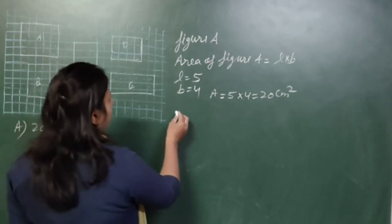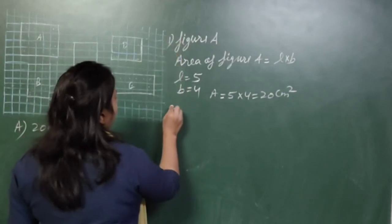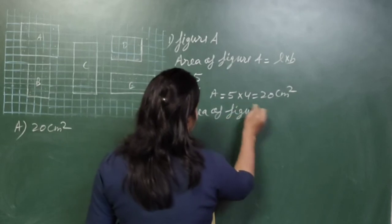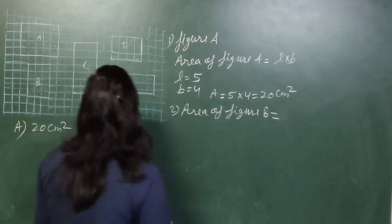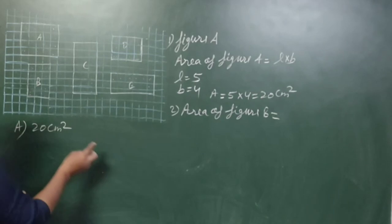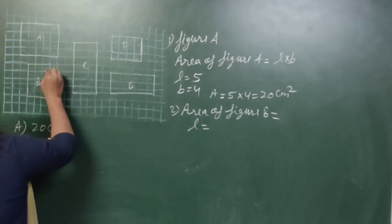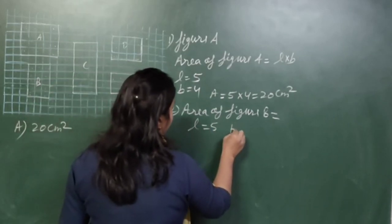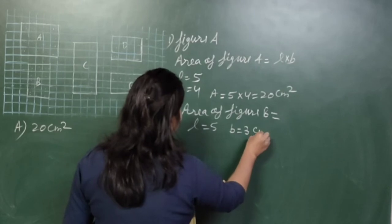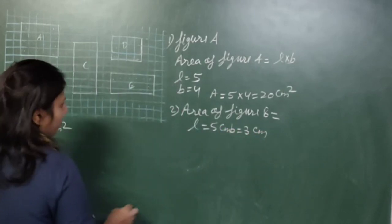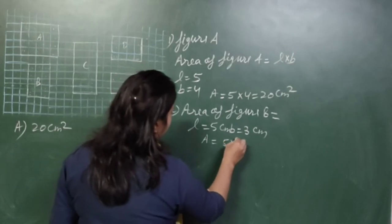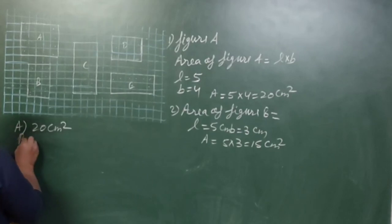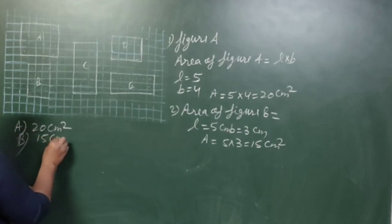Area of figure B: length is 5, breadth is 3. The longest side is the length (5 cm) and the shortest side is the breadth (3 cm). Area equals 5 × 3 = 15 centimetres square. Figure B has an area of 15 centimetres square.